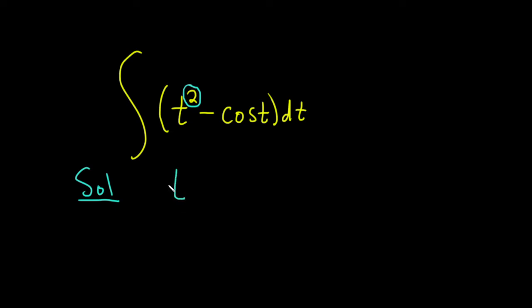So in this case, 2 plus 1 is 3, and then you divide by the result, so 3. When we're trying to integrate cosine, we have to ask ourselves: what's a function whose derivative is cosine? We're going backwards, so that's how we want to think about it. The derivative of sine is cosine, so this is just going to be minus sine t.